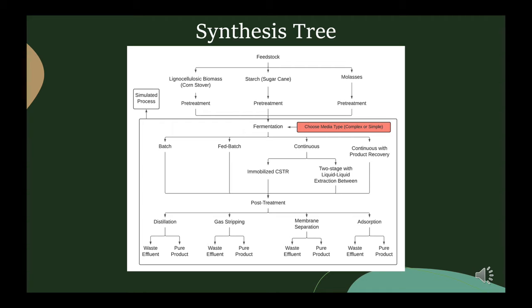All three of those processes are going to require some form of pretreatment, so there's a decision to be made as to what kind of pretreatment would be done. Moving on, we look at the fermentation. There are a few different choices: you could do a batch, fed batch, continuous, or continuous process with product recovery, which would look something like in-situ separation or vacuum filtration in between, or even a distillation column set up between two separate continuous reactors, or liquid-liquid extraction occurring in between these reactors.